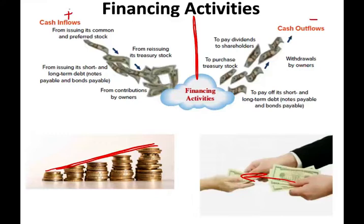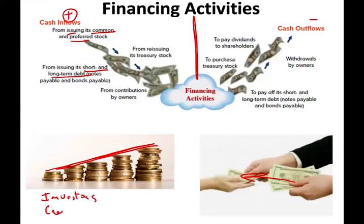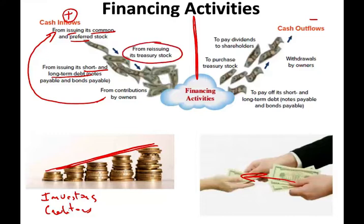Where does the company finance itself? They finance itself from their own stock — they issue stocks, whether common or preferred — or they issue short-term or long-term debt. Simply put, it's either investors buying the stocks, or from creditors who lend you the money. And you can also reissue treasury stocks; if you buy back your own stock, you can sell it again.